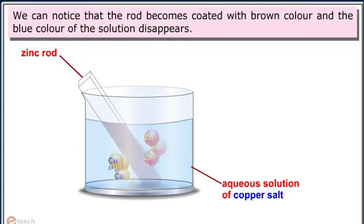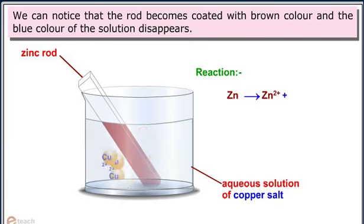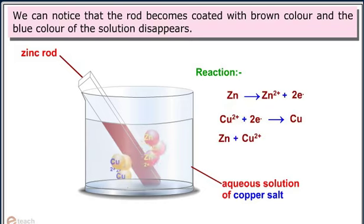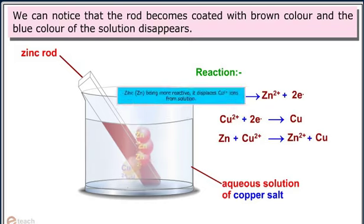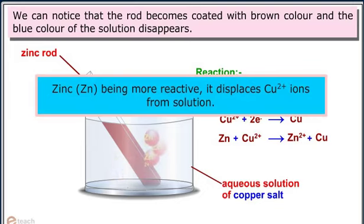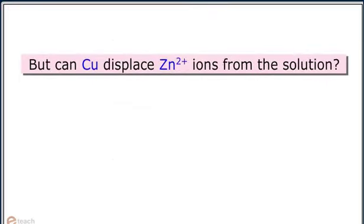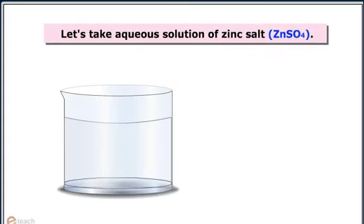After some time, Cu2+ deposited as Cu on the zinc rod, and Zn loses two electrons and dissolves as Zn2+. We can notice that the rod becomes coated with brown color and the blue color of the solution disappears.